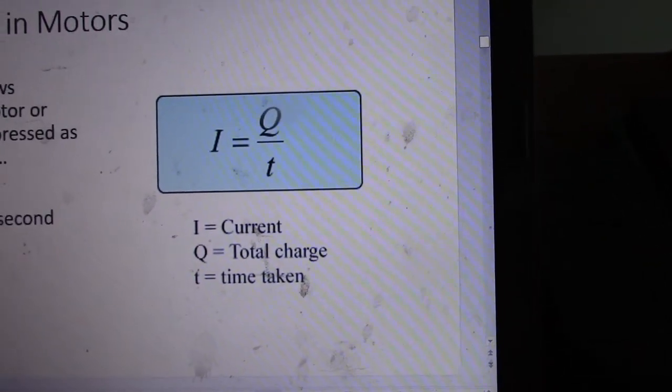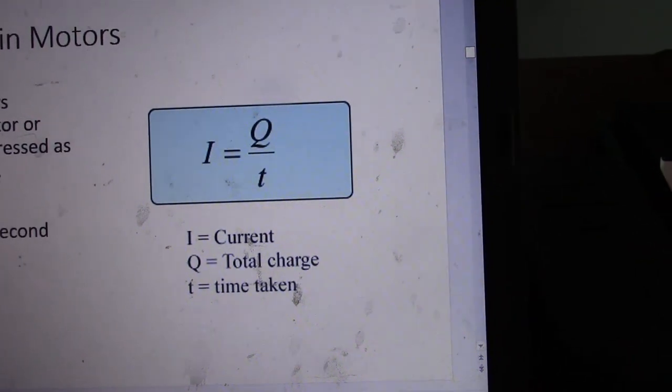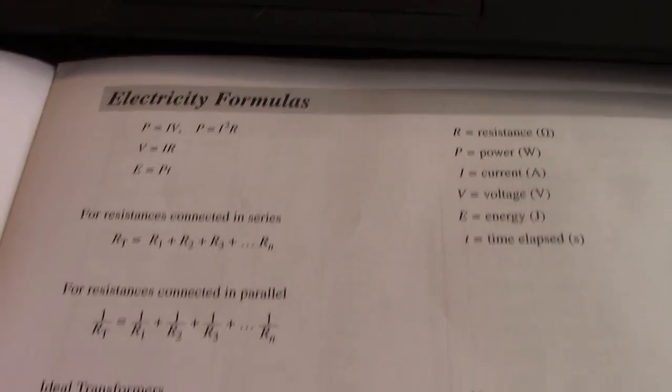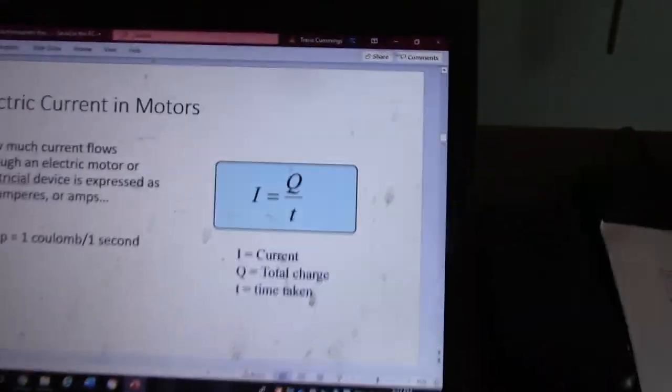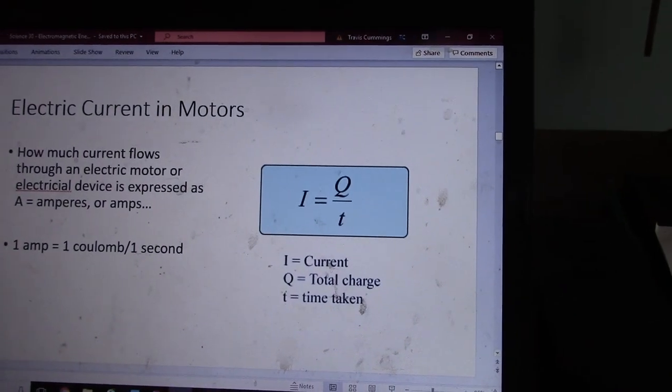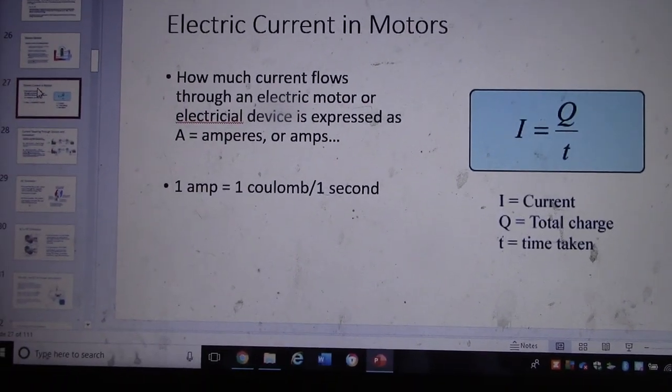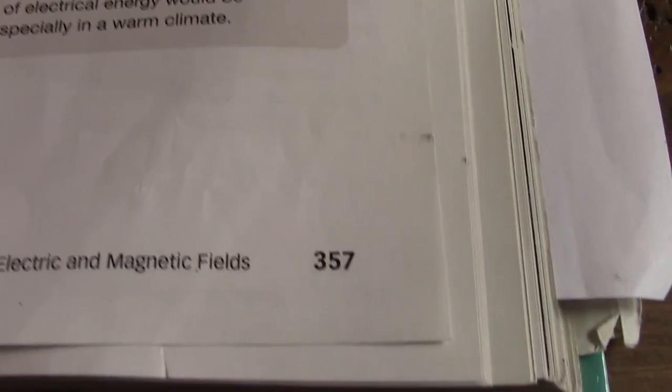One thing we need to calculate in motors is current. The equation for current is I equals Q over T. This is not in your data booklet, so you should add that in under your electricity formulas. Current is measured in amperes and it's the amount of electrons moving through a set point over time. Electrons are measured in Coulombs, so I equals Q over T.